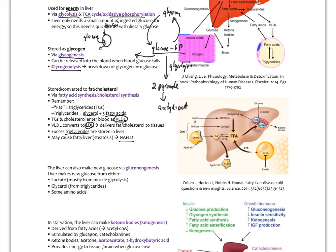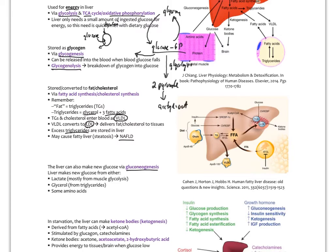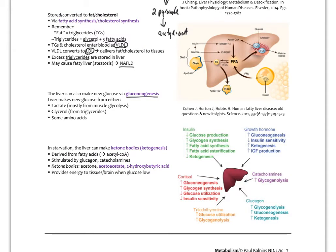The liver can also make new glucose via gluconeogenesis. This only happens in the liver, a little bit in the kidneys, but mostly the liver. The liver makes new glucose from either lactate — which comes from the anaerobic metabolism of glucose — as your muscles make a lot of lactate or lactic acid.